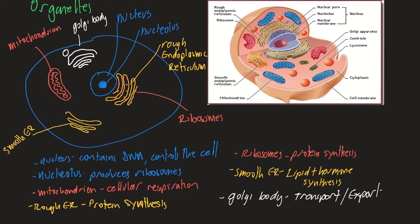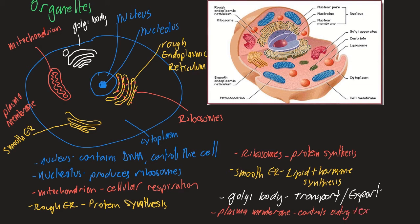All of these organelles sit within a gel-like liquid called the cytoplasm. Something else, of course, is the cell membrane — also called the plasma membrane — which controls movement in and out of the cell, regulating entry and exit.